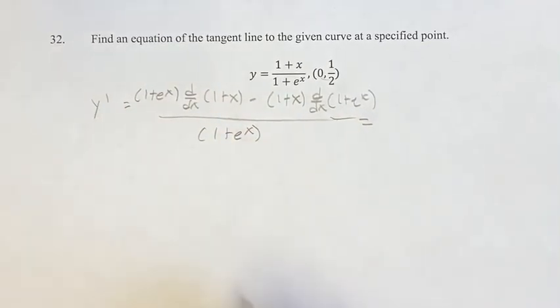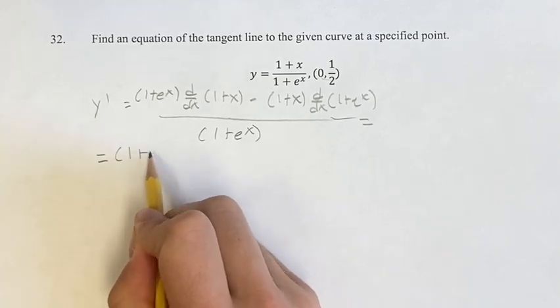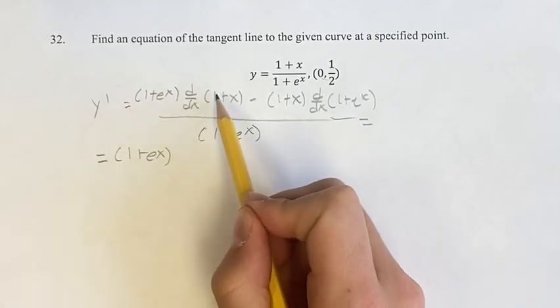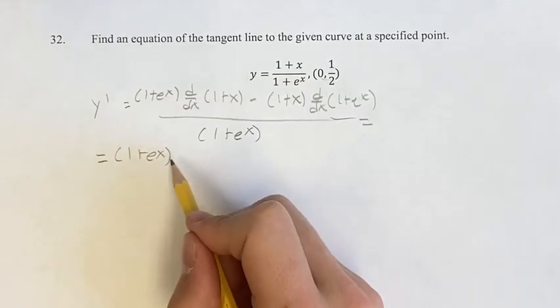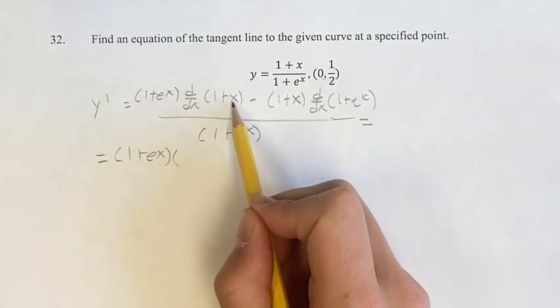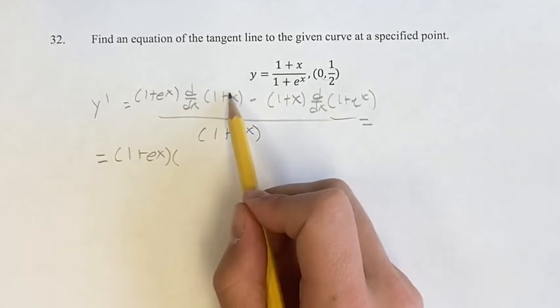This is equal to 1 plus e^x times the derivative of 1. It's a constant, so it's just 0. So 0 plus whatever this is, so the derivative of x.